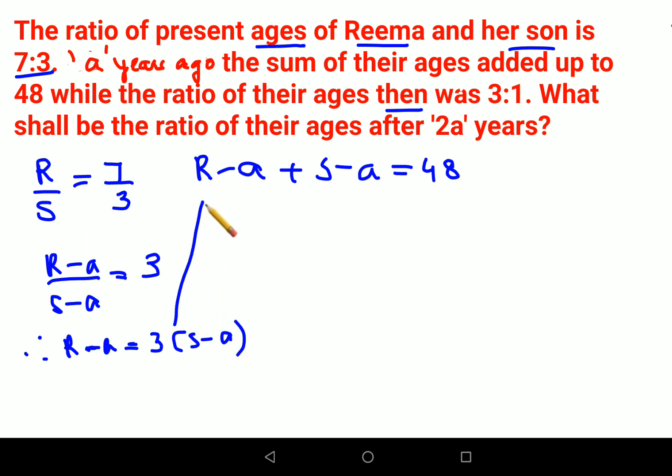So I will put this value over here. So I will have 3S minus A plus S minus A equals to 48. So this looks like 4S minus A equals to 48. Therefore, I can say value of S minus A is coming out to be 12. And I will put the value of 12 over here.